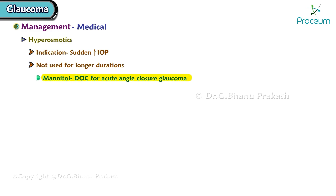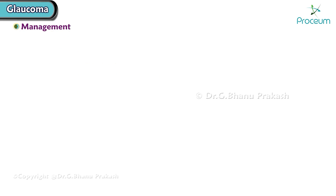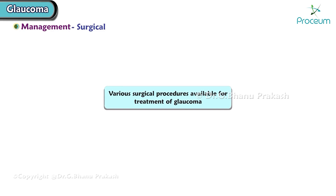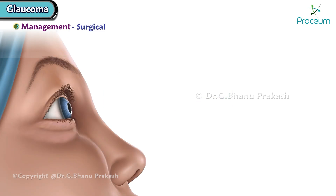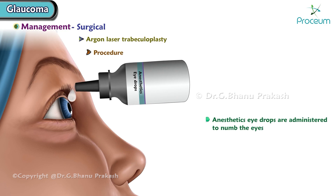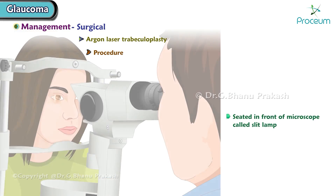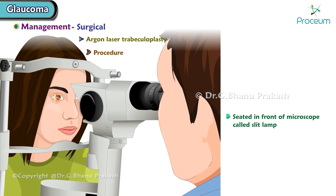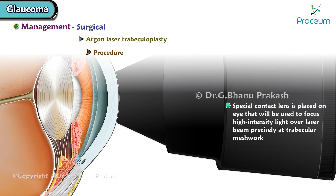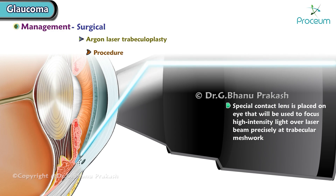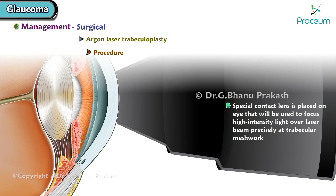Surgical management of glaucoma. Argon laser trabeculoplasty: first, anesthetic eye drops are administered to numb the eye. The patient is seated in front of the slit lamp microscope. A special contact lens is placed on the eye and a precisely focused high-intensity laser beam is directed at the trabecular meshwork. This helps clear the blockade and reduces eye pressure.